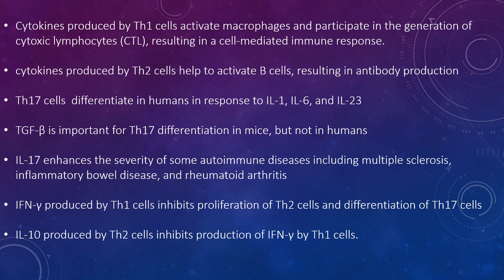TGF-beta is important for Th17 differentiation in mice, but not in humans. IL-17 enhances the severity of some autoimmune diseases, including multiple sclerosis, inflammatory bowel disease, and rheumatoid arthritis. Each subpopulation can exert inhibitory influences on others: interferon gamma produced by Th1 cells inhibits proliferation of Th2 cells and differentiation of Th17 cells. IL-10 produced by Th2 cells inhibits interferon gamma production by Th1 cells, and IL-4 can inhibit production of Th1 cells and differentiation of Th17 cells.